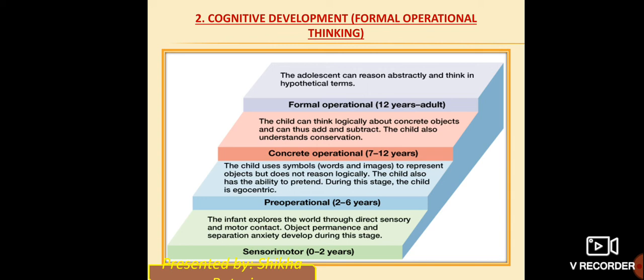The next point is cognitive development — formal operational thinking. Sangyaanatmak vikas kis tarike se hota hai. As you know, Jean Piaget gave this theory. According to that, there are four stages: first is the sensory motor stage, second is the pre-operational stage, third is the concrete operational stage, and fourth is the formal operational stage.